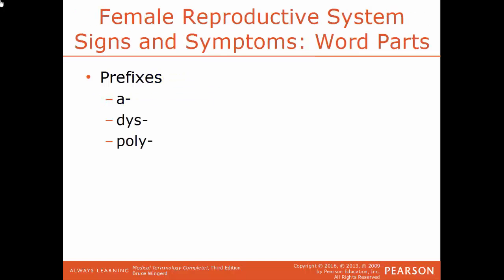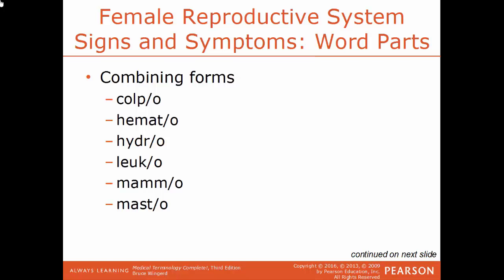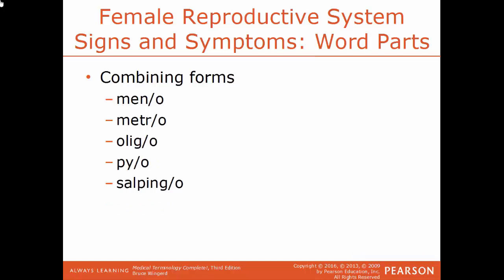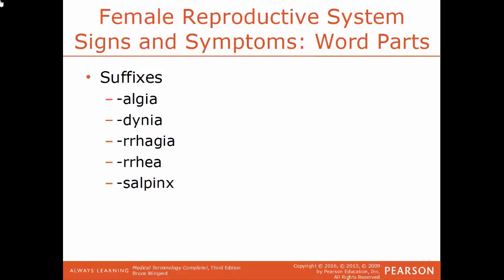Signs and symptoms of the female reproductive system and word parts: prefix A means lacking or without, Dis means painful or abnormal, Poly means more than one. Combining forms include Culpo for vagina, Hemato for blood, Hydro for water, Leuco for white, Mammo and Masto both for breast, Menno for menstruation, Metro for uterus, Oligo for few, Pio for pus, and Salpingo for fallopian tube. Suffixes include Algea and Denia for pain, Aurasia for bursting forth of blood, Urea for discharge, and Salpingx for fallopian tube.